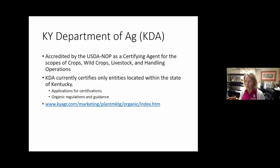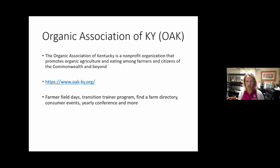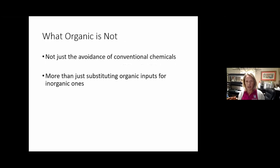Here in Kentucky, the Kentucky Department of Agriculture certifies organic farms. Their website has all the regulations and guidance and helps farmers become certified. We also have the Organic Association of Kentucky — OAK — a great nonprofit organization that promotes organic agriculture in Kentucky for commercial farmers doing organic production. They do field days, have a farm directory, and hold a yearly conference. There's a lot of information for more commercial-scale organic farming, but today we're focusing on organics in the home garden.